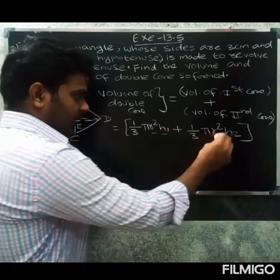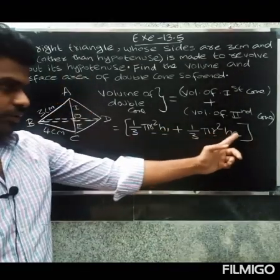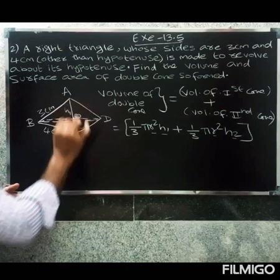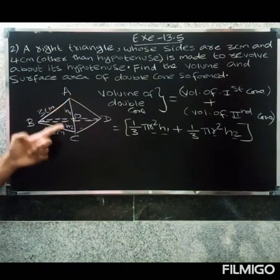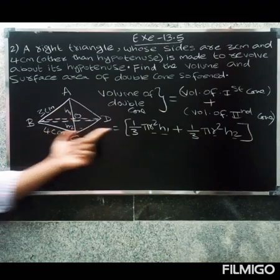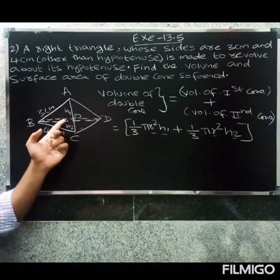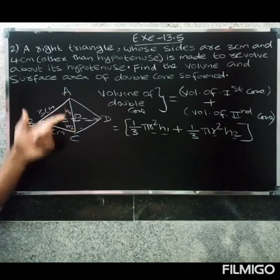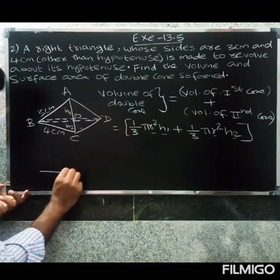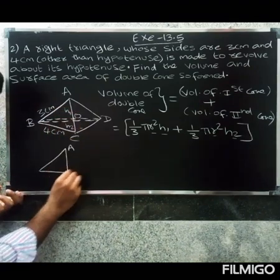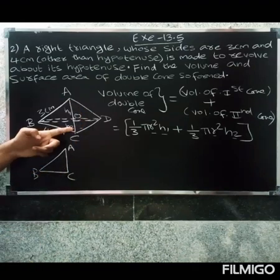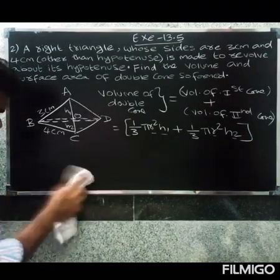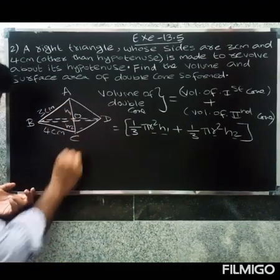We need to add h1 and h2. Here h1 is OA and h2 is OC, and the radius is OB. The total height h1 plus h2 is the total AC. In the triangle ABC, the hypotenuse is AC.